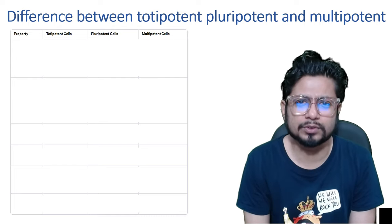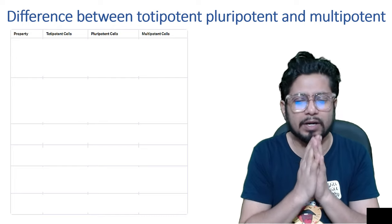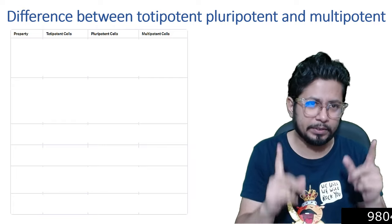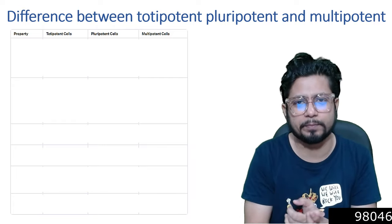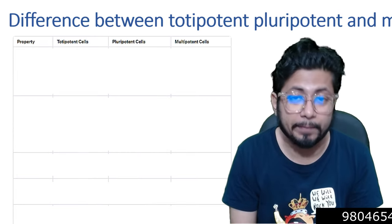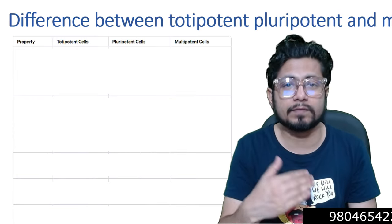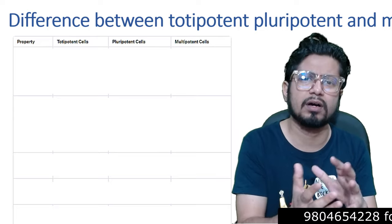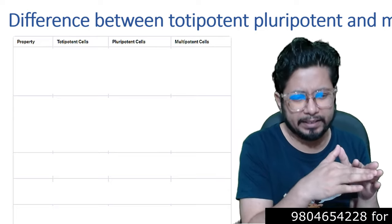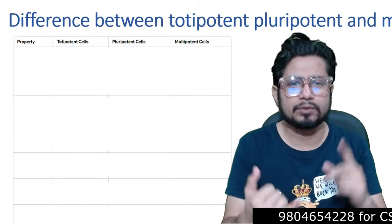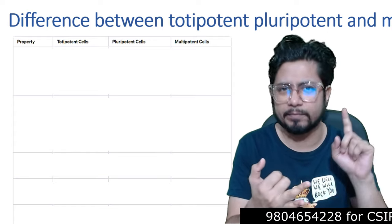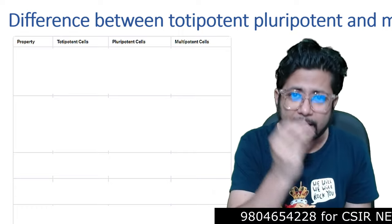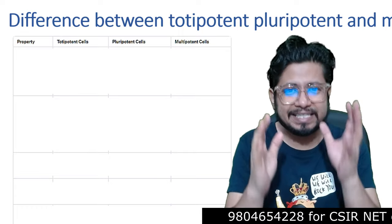Hello everyone, welcome back to another video from Shomuz Bharaji. In this video, I'm going to clear one doubt for all of you. The doubt is the difference between totipotent, pluripotent, and multipotent — in terms of potency, in terms of the number and kind of cells a stem cell can generate. What is the difference among these three terms? Here it is for you.